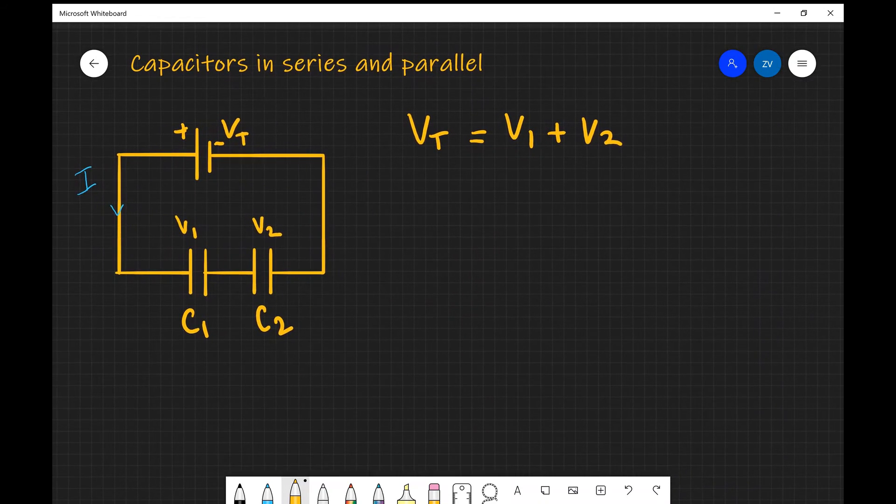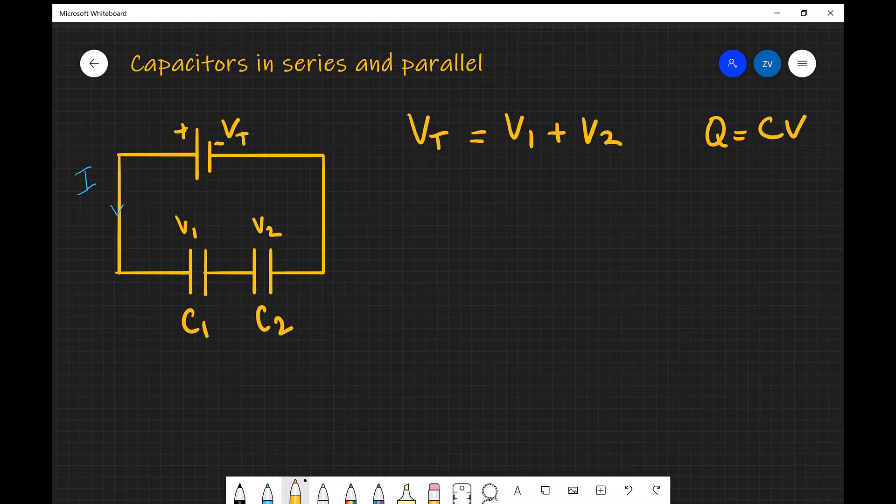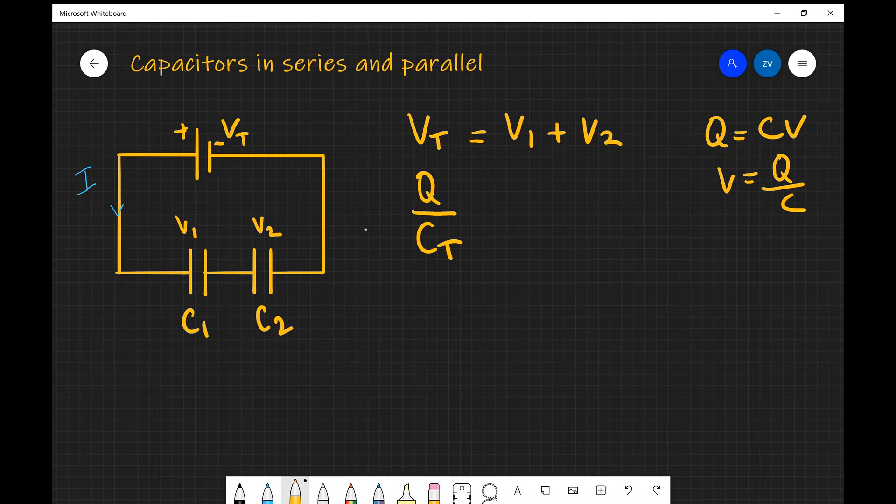However, hang on a minute. We know that Q is equal to C times V in general, which means that rearranging for V, we know that V is going to equal Q over C. So that means that the total voltage is actually going to equal the total charge, which let's call it Q, divided by the total capacitance C total. And that's going to equal Q over C1, if we apply the same formula for V1, plus Q over C2.